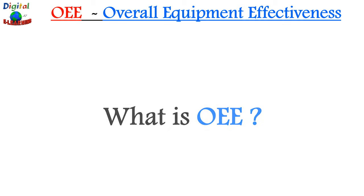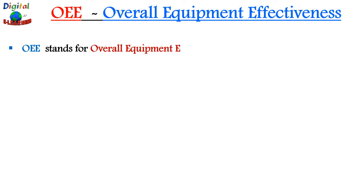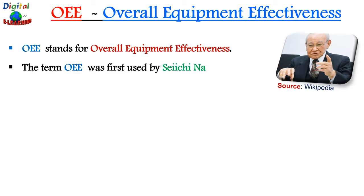What is OEE? OEE stands for Overall Equipment Effectiveness. It is a lean manufacturing tool or a key performance indicator metric which is used for measuring manufacturing productivity. It basically tells us how efficiently we are managing our assets in the manufacturing process. The term OEE was first used by Saichi Nakajima in 1960, who is also known as the father of TPM or Total Productive Maintenance. He said that OEE is the main objective of TPM.